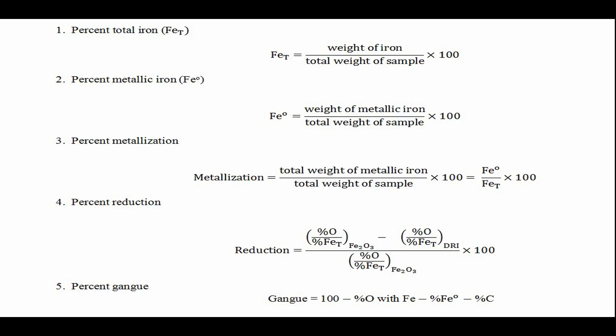Five: Percent gangue refers to the non-iron compounds such as silica, alumina, calcium, magnesium, etc., in the direct reduced iron.